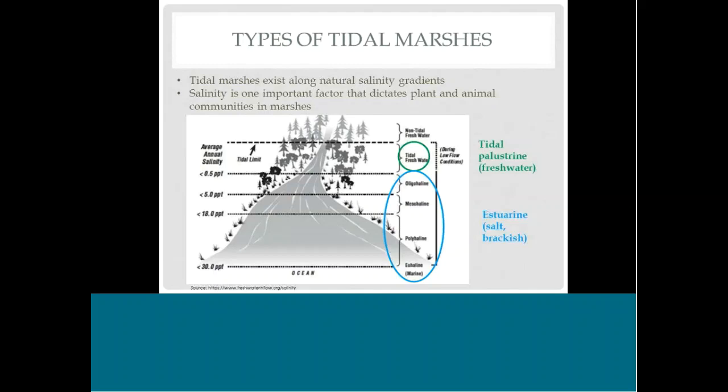Further inland, you'll hit tidal palustrine or tidal freshwater wetlands — close enough to the ocean to still experience tide but far enough away that the water is fresh. Go any further and you'll hit non-tidal freshwater wetlands, which we won't cover today since living shorelines mostly deal with tidal wetlands. Salinity is a really important factor that dictates the plant and animal communities in these marshes, causing them to look quite different from one another.